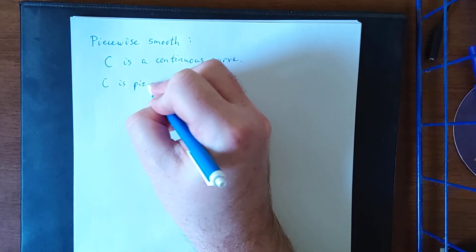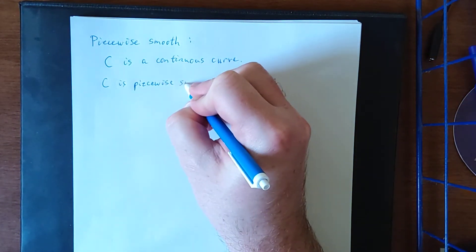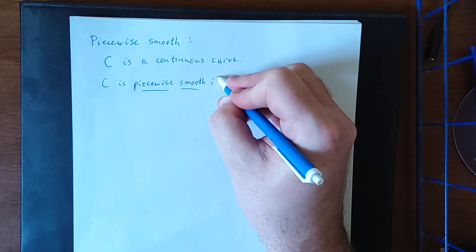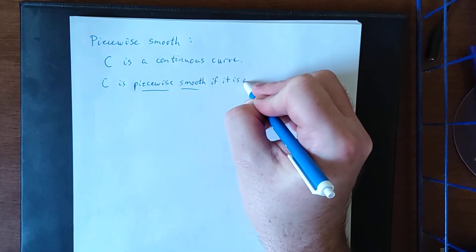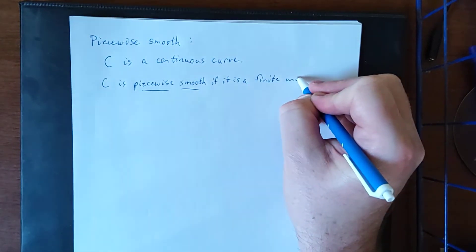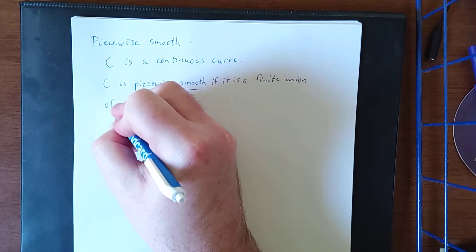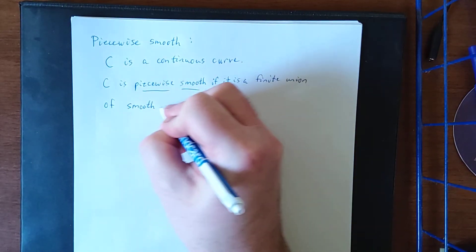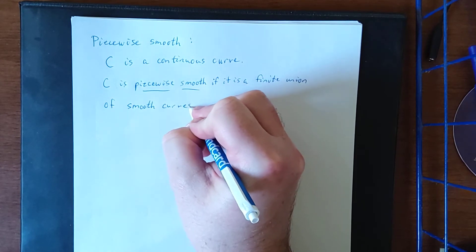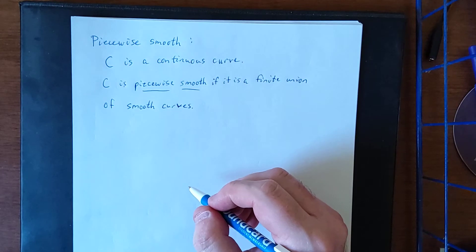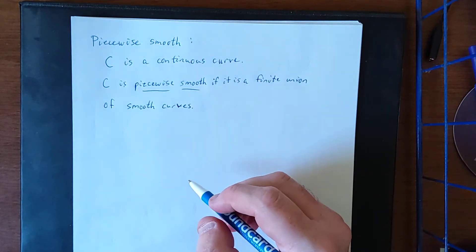C is piecewise smooth if it is a finite union of smooth curves. Now curves are said to be smooth if they have no corners or cusps associated with them.